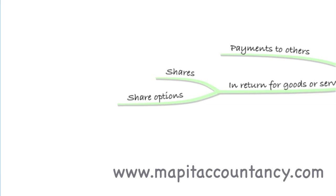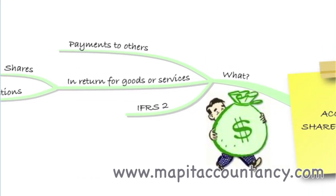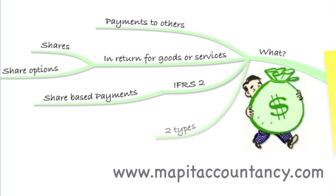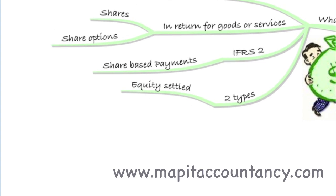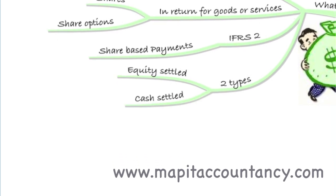So we're paying others by giving them our shares, the shares in our company. The key thing to remember is that it's in return for goods and services. The payments have to be in return for goods and services. If there are no goods received, no services received and you pay in shares, that will be dealt with differently — not under IFRS 2. So IFRS 2 covers share-based payments and there are two main types: equity settled, where we settle the transaction in equity, in shares, or cash settled, where we settle the transaction in cash based on the share price.